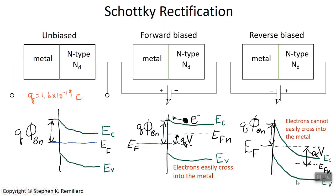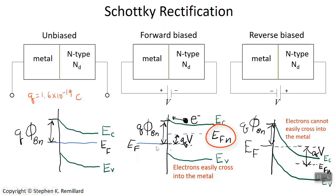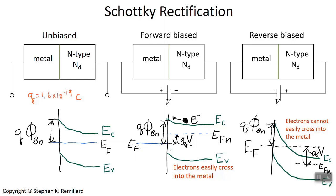For a p-type semiconductor, the description is very similar — the band bending is downward toward the interface rather than upward. We can use these energy band diagrams to derive a useful expression, since all quantities are well defined: the Schottky barrier height, the applied voltage, the height of the quasi-Fermi level above the metal Fermi level, and the band gap. The relation I'm about to write is valid for both forward and reverse bias, but it's easier to see in the forward bias case.